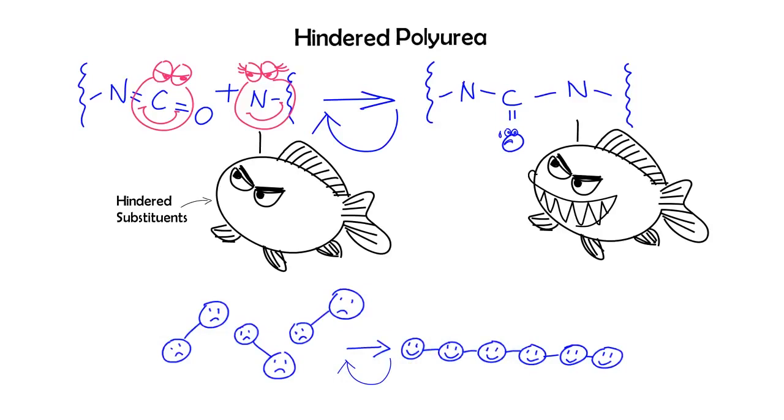The reversible property caused by the hindered group actually enables many new applications that traditional polyureas can't do. As a processable thermoset, hindered polyureas can be used as hot melt structural adhesives, which have previously only been realized with thermoplastics.